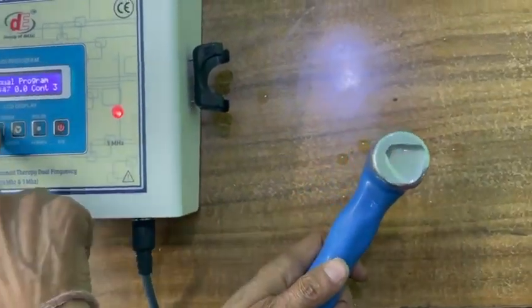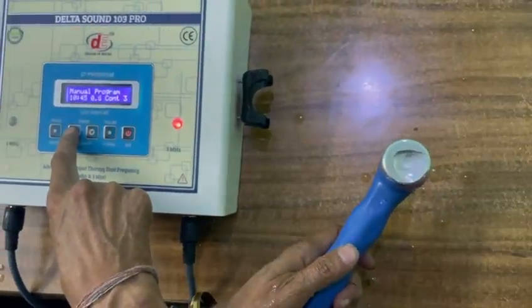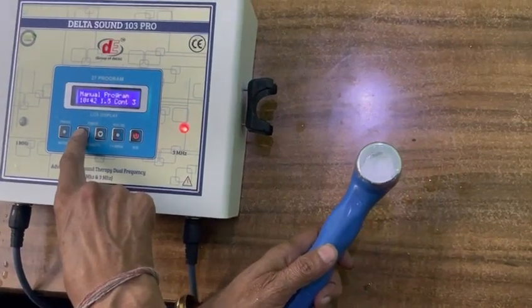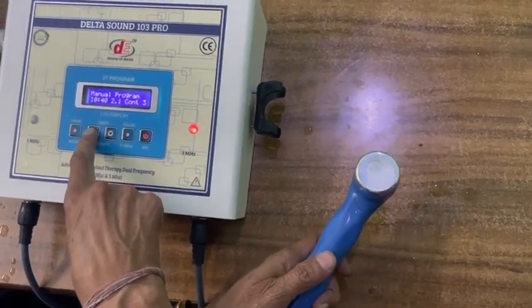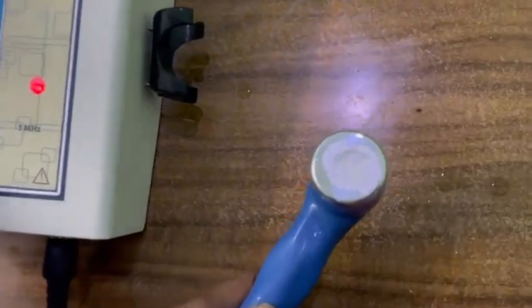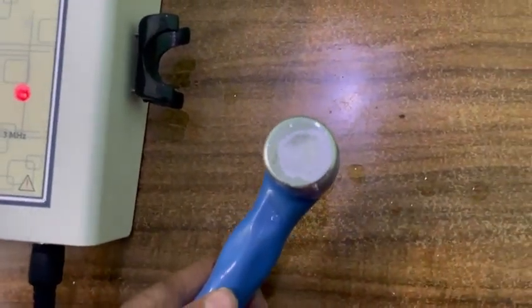Now increase the intensity. Now it is working on 3 MHz. The same process for program mode and 3 MHz.